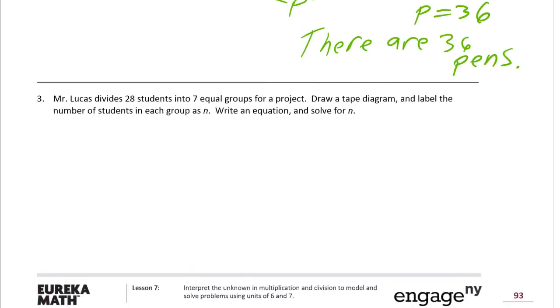So now we need a tape diagram. Number three: Mr. Lucas divides 28 students into 7 equal groups for a project. Draw a tape diagram. Label the number of students in each group as N. Write an equation and solve for N.